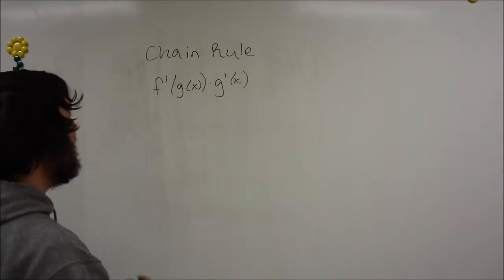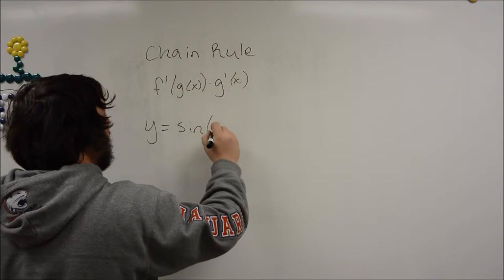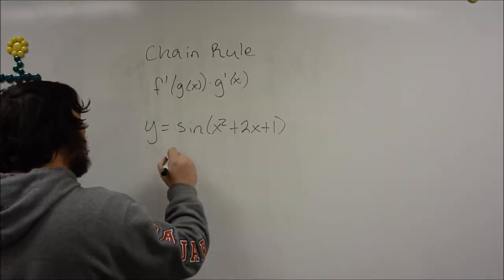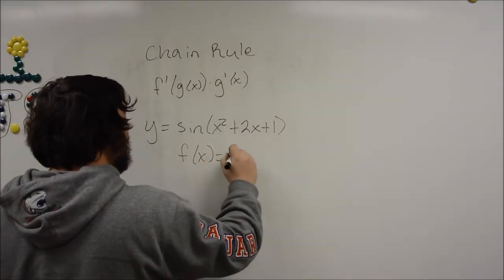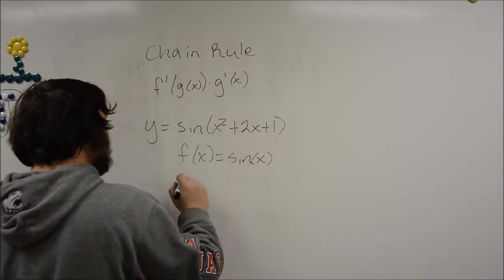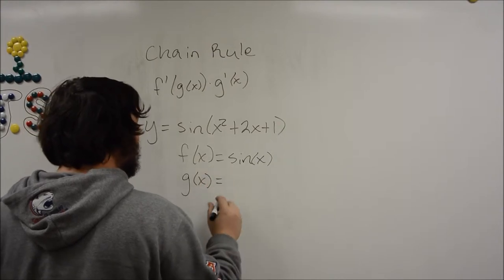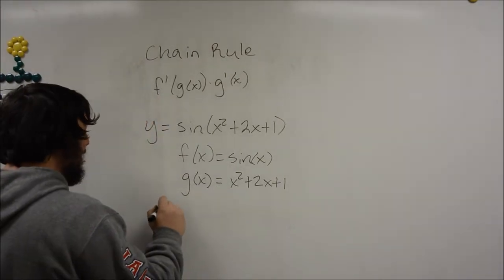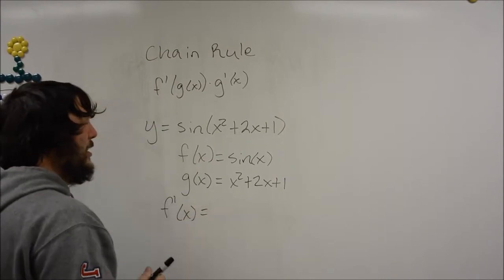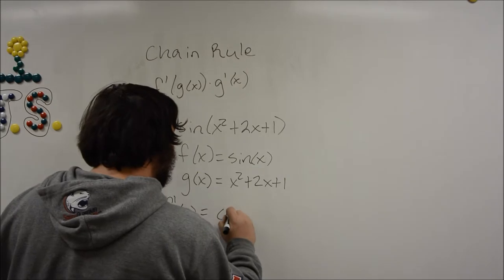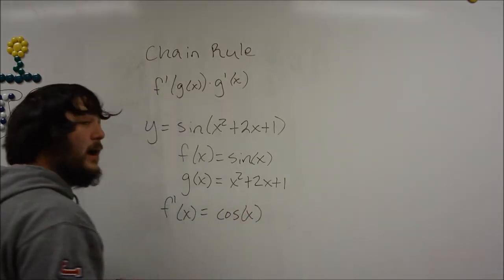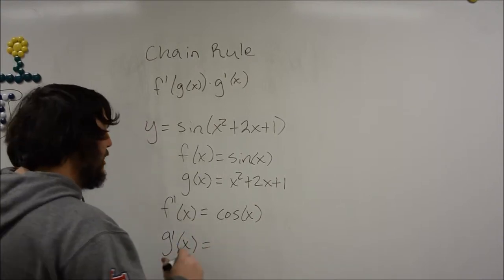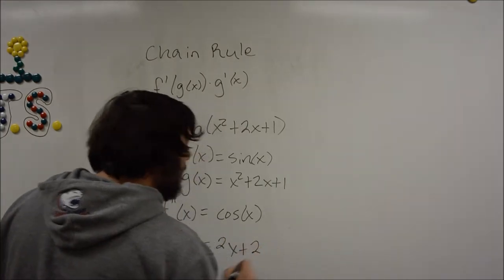If we look back to our previous example, y equals the sine of x squared plus 2x plus 1, and we decompose again. So f of x equals the sine of x, and g of x equals x squared plus 2x plus 1. So first we need to find out what f prime of x is. And if you remember, the derivative of sin of x is cosine of x, and the derivative of x squared plus 2x plus 1 is simply 2x plus 2.